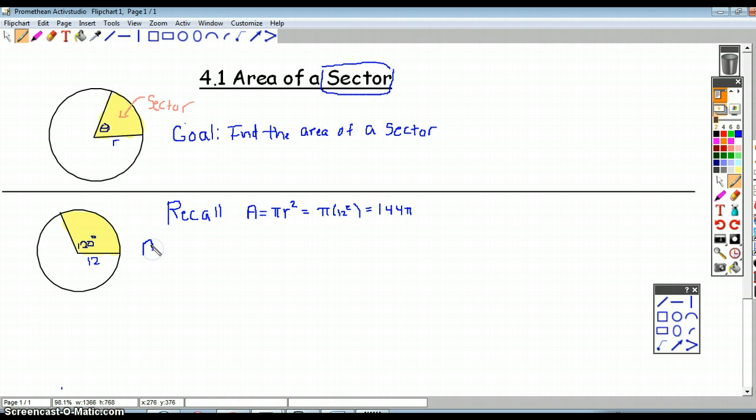The area of this sector is 120/360ths of the area of the entire circle. So it's 120/360 times the area of our whole circle, which we know is 144π. Again, we use that central angle to tell us the fraction of the area that this sector is taking up.